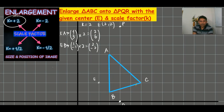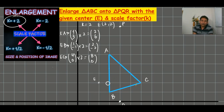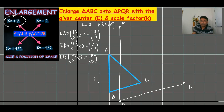Now for C, the column vector from center to C is (4, 0). Multiplying with scale factor two gives (8, 0). This position is the image of C, that is R. When we join these positions P, Q, R, this is the image — we have done the enlargement of triangle ABC onto PQR.